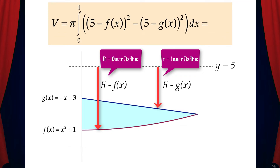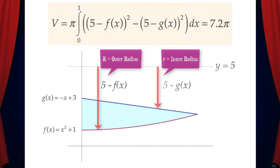So the volume is pi times the integral from 0 to 1 of the quantity (5 minus f of x) squared minus the quantity (5 minus g of x) squared dx. We can plug this into a calculator and we get the answer 7.2π.